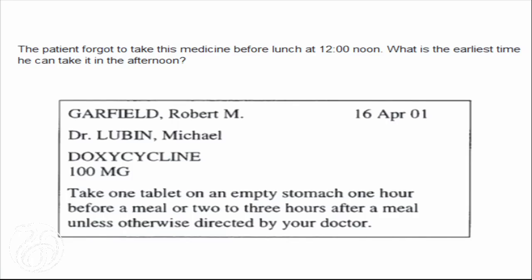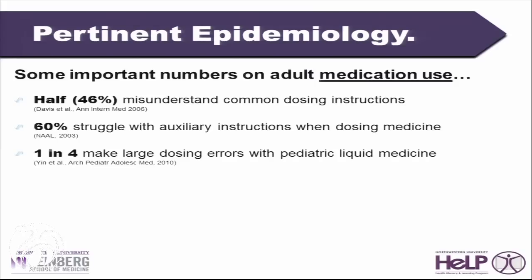Sixty percent struggle with auxiliary instructions when dosing medicine, from many sources including NAALS data, where 40 percent of patients got a particular question wrong. One in four make large dosing errors with pediatric liquid medication — a study done by Dr. Dreyer and Dr. Yin out of NYU. It depends on whether you're using a cup, dose cup, or syringe, and what is the most accurate instrument.